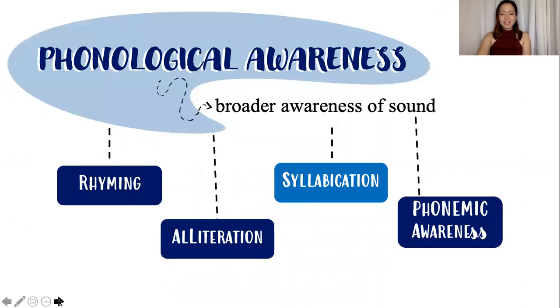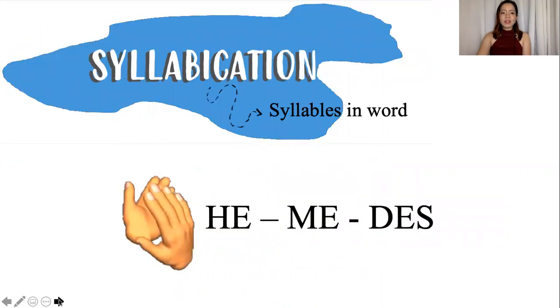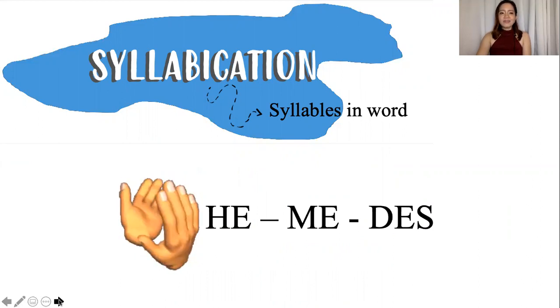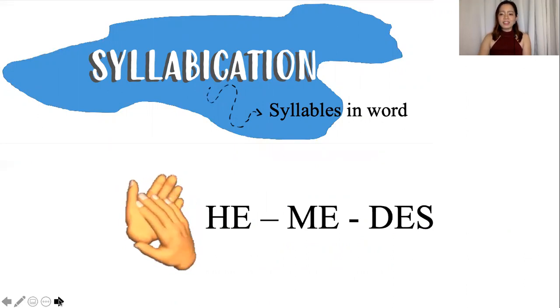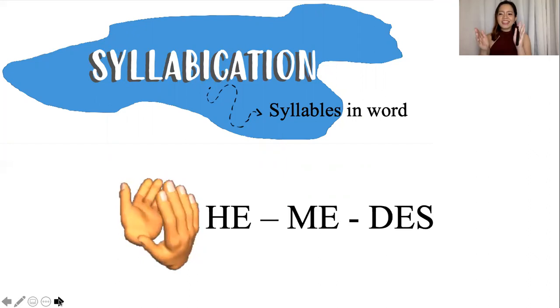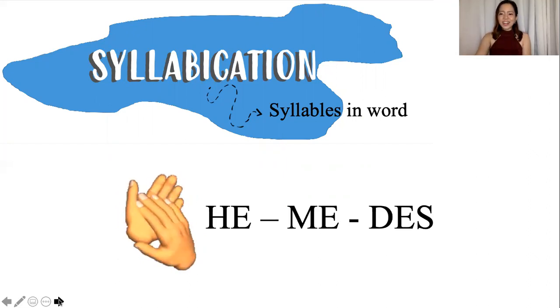Next is syllabication. Syllabication is cutting a word into smaller parts, the syllables. So, for this portion, I want you to try this. I want you to clap the number of syllables of your last name, such as this: He-me-des. Go, try it on yourself.